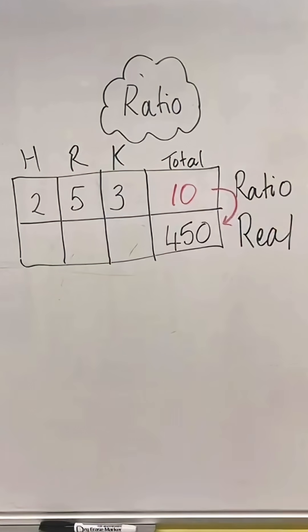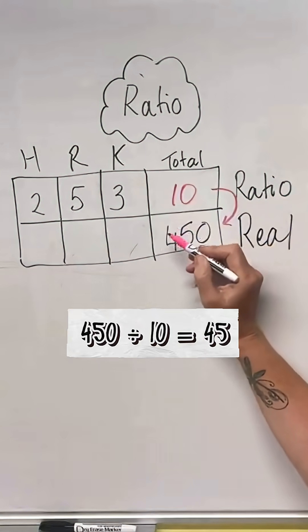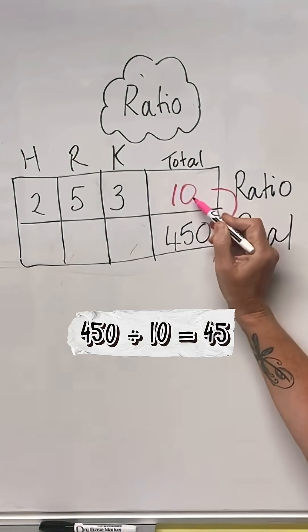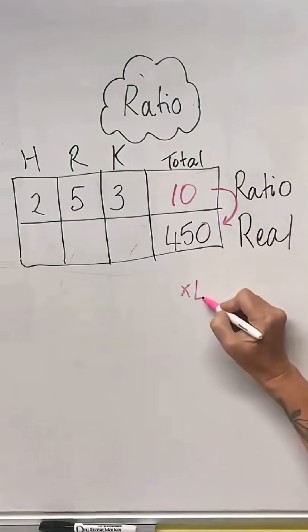To get 450, and that's going to be 45. If we don't know it, we can do the opposite way: we can say 450 divided by 10 would give us 45. So I'm going to write down here times 45.